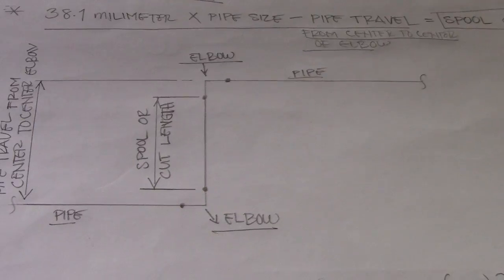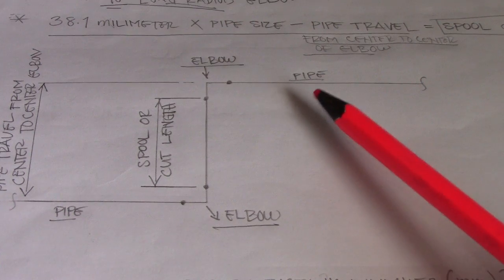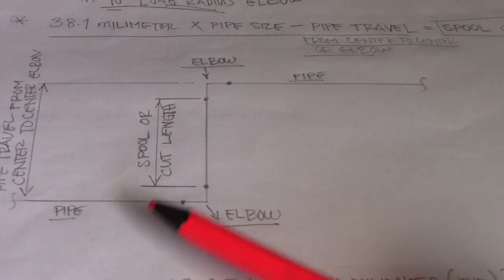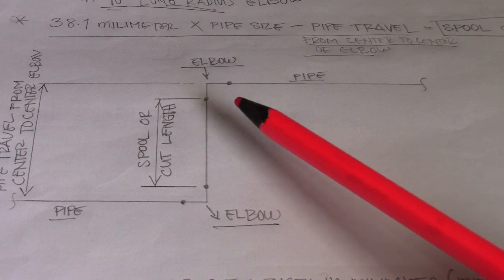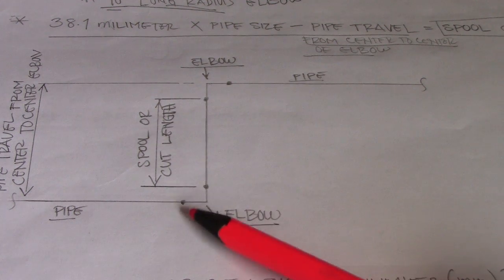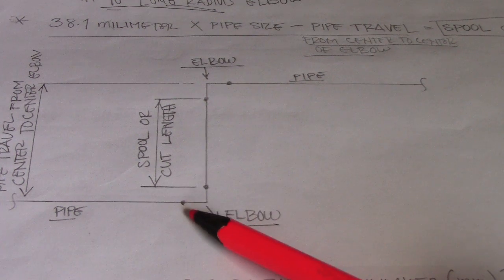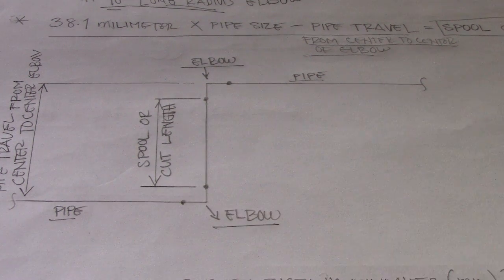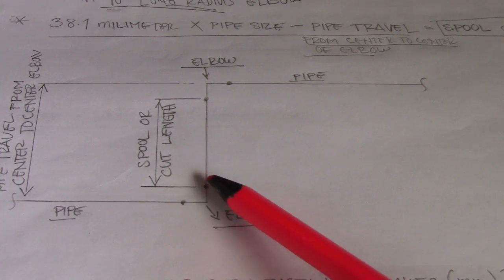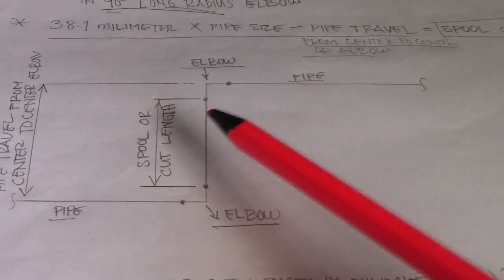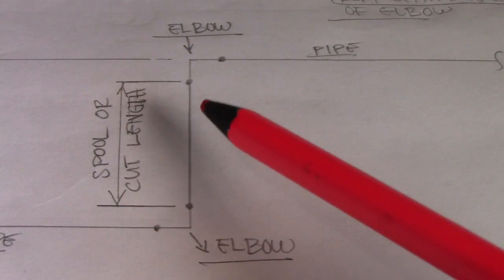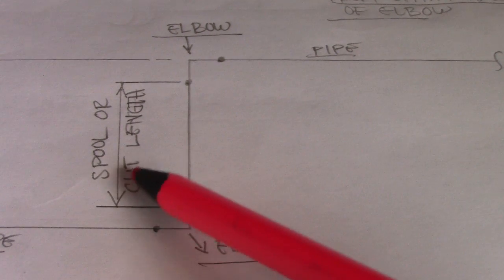We have a solution here and we have pipe, elbow, pipe, spool, and we have elbow. So we have two elbows here and how many joints? One, two, three, four. So we have four joints and we will find this spool from this joint.